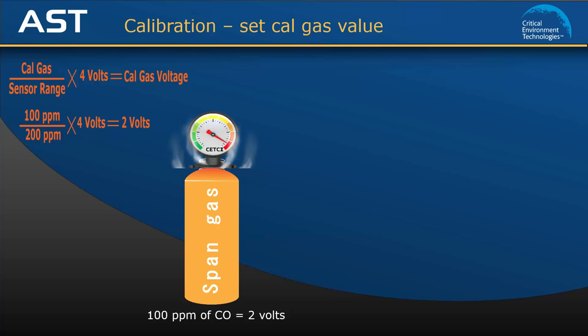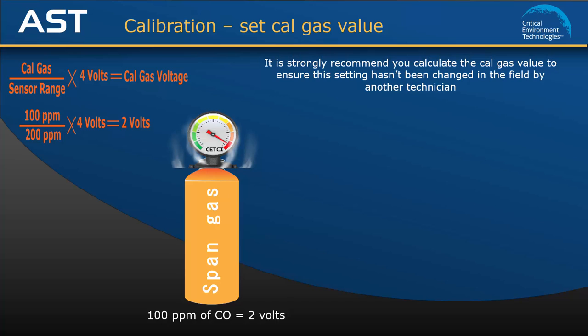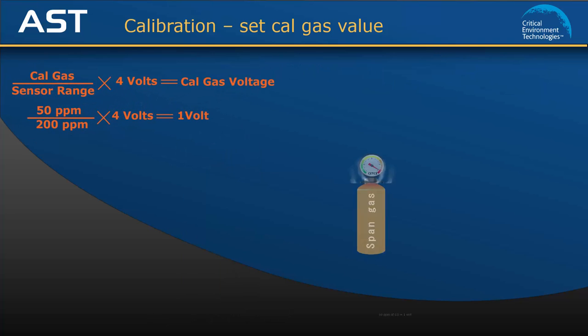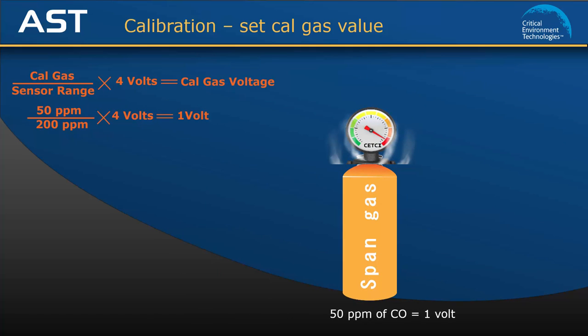Although the factory default is set to 2 volts and corresponds to 100 ppm of calgas concentration, we strongly recommend that you calculate the calgas value to ensure this setting hasn't been changed in the field by another technician using a different calgas concentration. For example, in a situation where you might have a different calgas concentration in your toolkit, you will need to use the formula to calculate the correct voltage so the unit knows what reference to use. If you are using a 50 ppm concentration, you will calculate that the calgas value should be set to 1 volt.